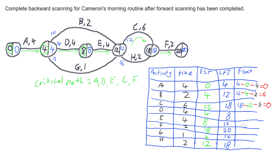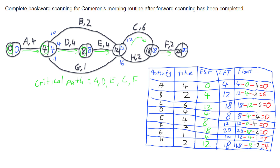Filling in the rest of the table, we can see the float times for all activities. B can start at the 4th minute, has to be finished by the 12th minute, and can be delayed by 6 minutes. A, C, D, E, and F cannot be delayed — they are all on the critical path. G can start as early as the 4th minute, has to finish by the 12th, and can be delayed by 7 minutes. H can start by the 12th, has to be finished by the 18th, and can be delayed up to 4 minutes.